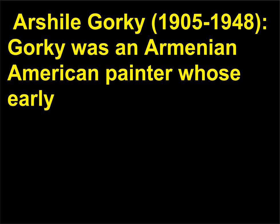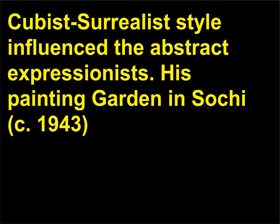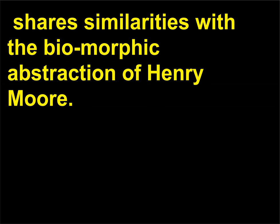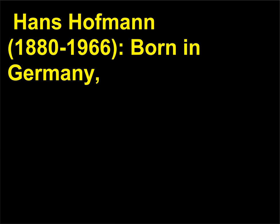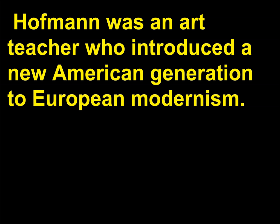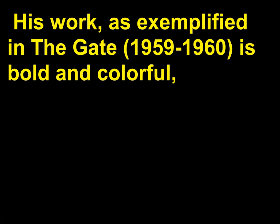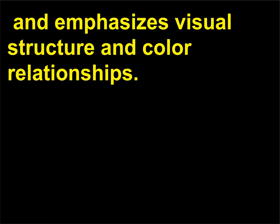Arshile Gorky (1905–1948) was an Armenian-American painter whose early Cubist-Surrealist style influenced the abstract expressionists. His painting Garden in Sochi (c. 1943) shares similarities with the biomorphic abstraction of Henry Moore. Hans Hofmann (1880–1966), born in Germany, was an art teacher who introduced a new American generation to European modernism. His work, as exemplified in The Gate (1959–1960), is bold and colorful and emphasizes visual structure and color relationships.